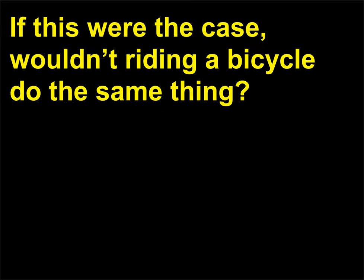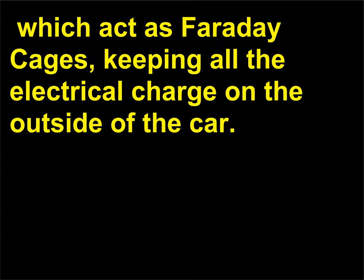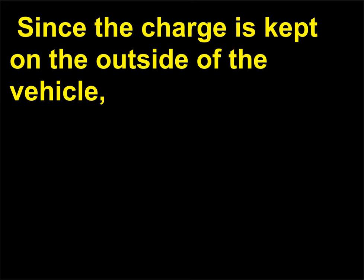If a car's metal body kept it safe from lightning, wouldn't riding a bicycle do the same thing? The real reason why a car is a safe place to be when struck by lightning is because most cars have metal bodies, which act as Faraday cages, keeping all the electrical charge on the outside of the car. Since the charge is kept on the outside of the vehicle, the person sitting inside the car is kept perfectly neutral and safe. It is the shielding of the metal car body, and not the rubber tires, that protects people in automobiles.